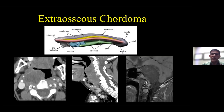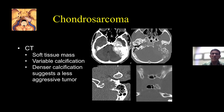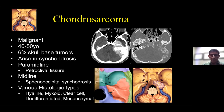Now, chondrosarcomas arise paramidline, and they tend to arise from just to the left of midline, which is the petroclival synchondrosis. Chondrosarcomas also oftentimes will have what my musculoskeletal colleagues refer to as rings and circles, and they tend not to have that pseudo-cystic appearance. On T2, they can be either low or high signal, depending on the actual elements. As a rule of thumb, chordomas tend to be midline whereas chondrosarcomas are more paramidline with new bone formation.